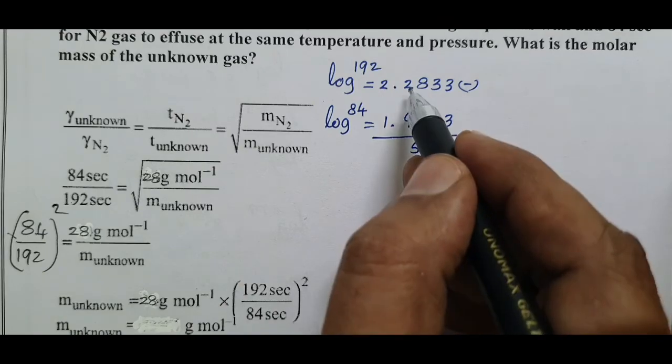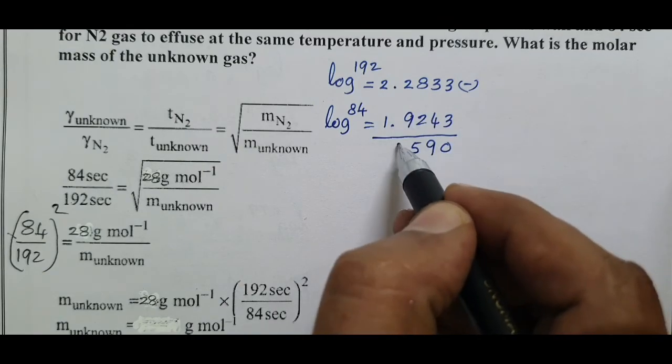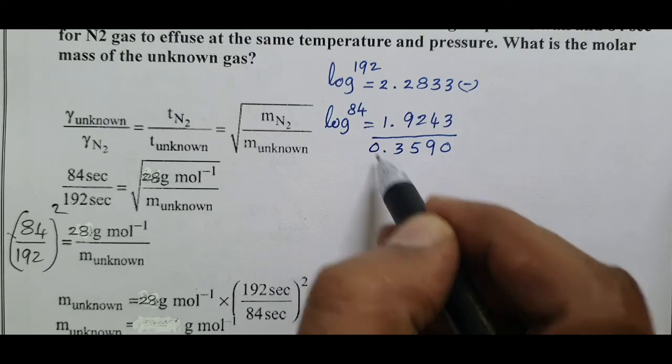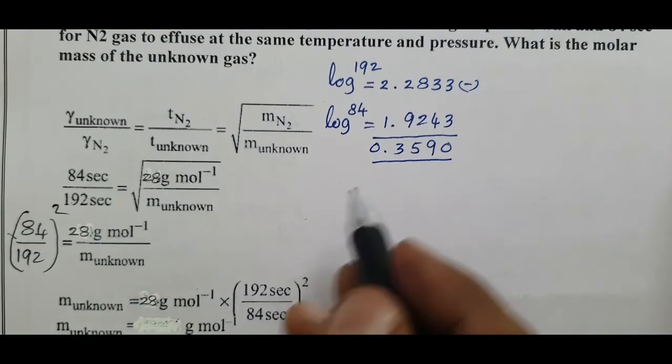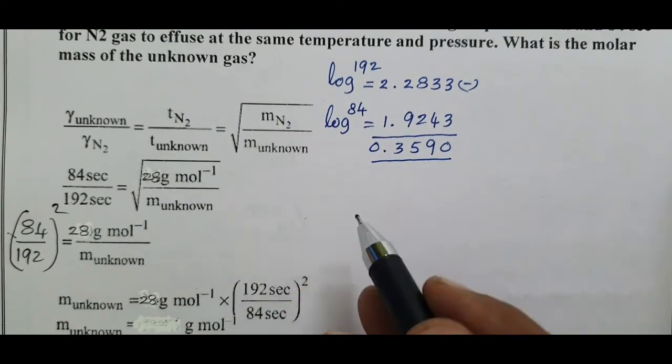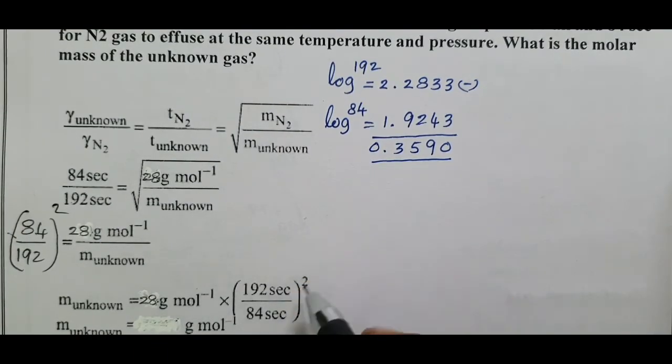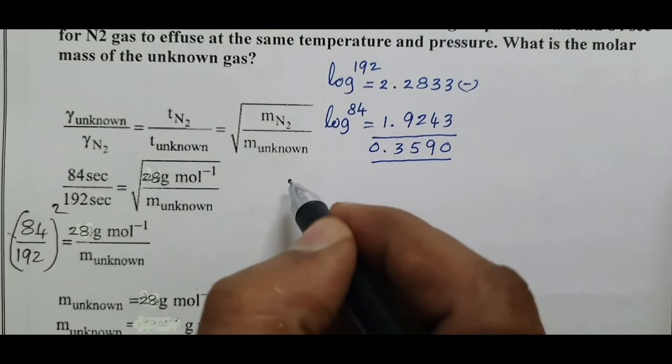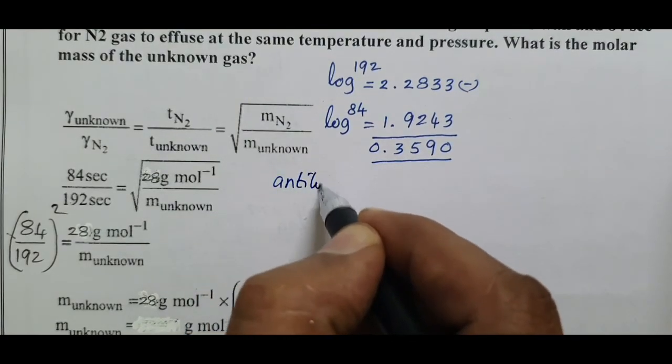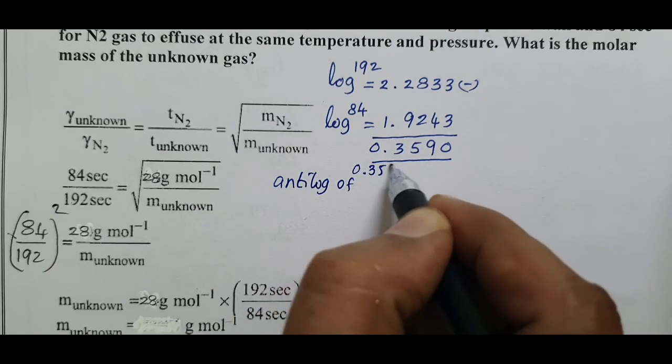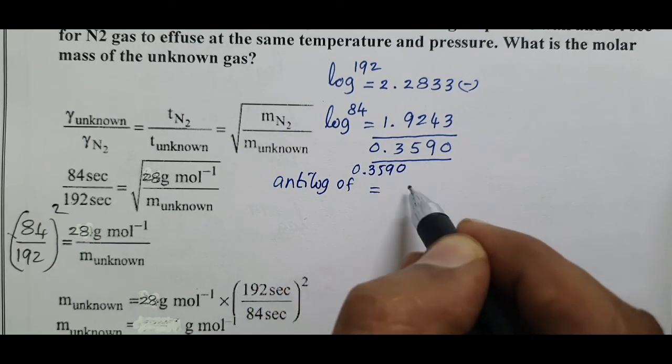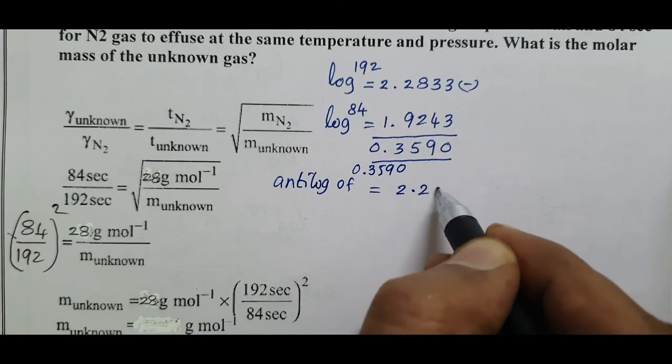And here you have 12 minus 9 equals 3, 1 minus 1 equals 0, so 0.3590. Antilog of our answer 0.3590 equals 2.286.